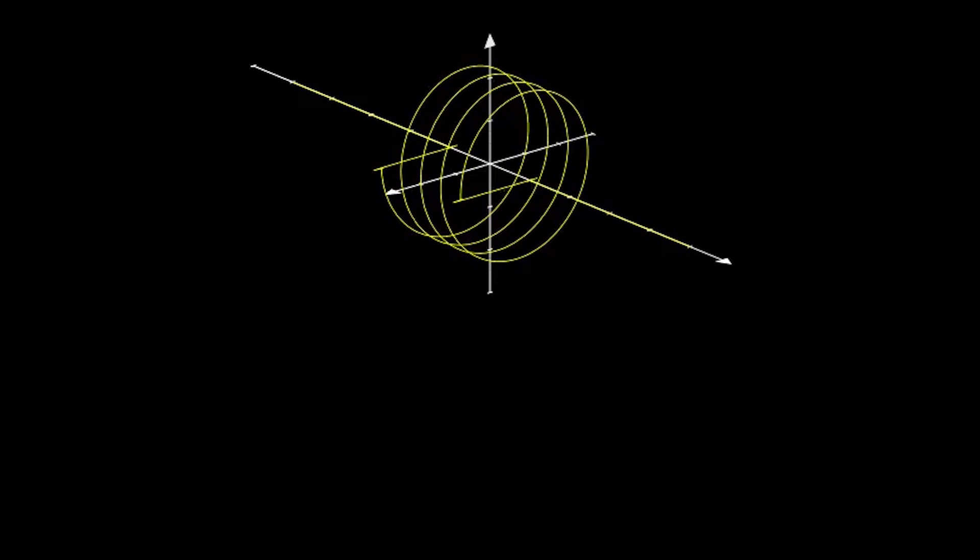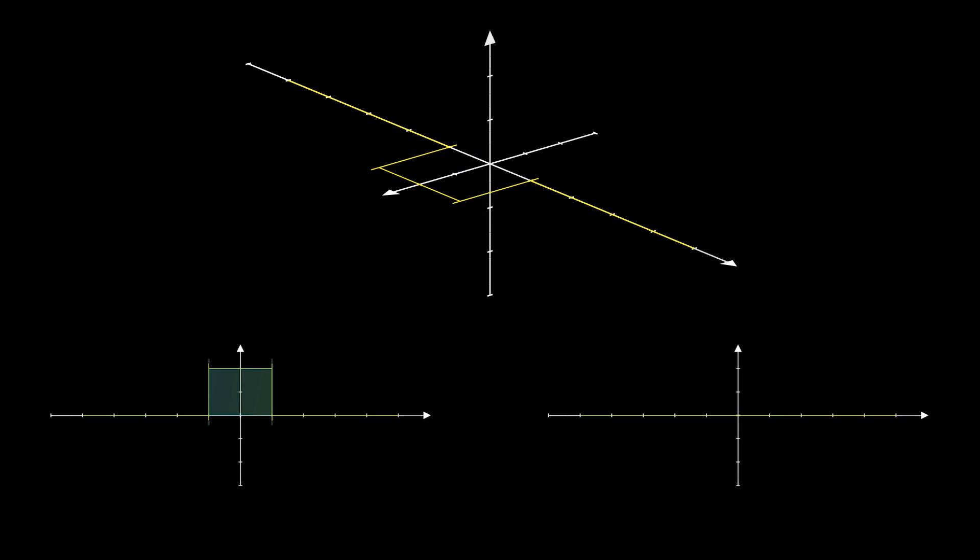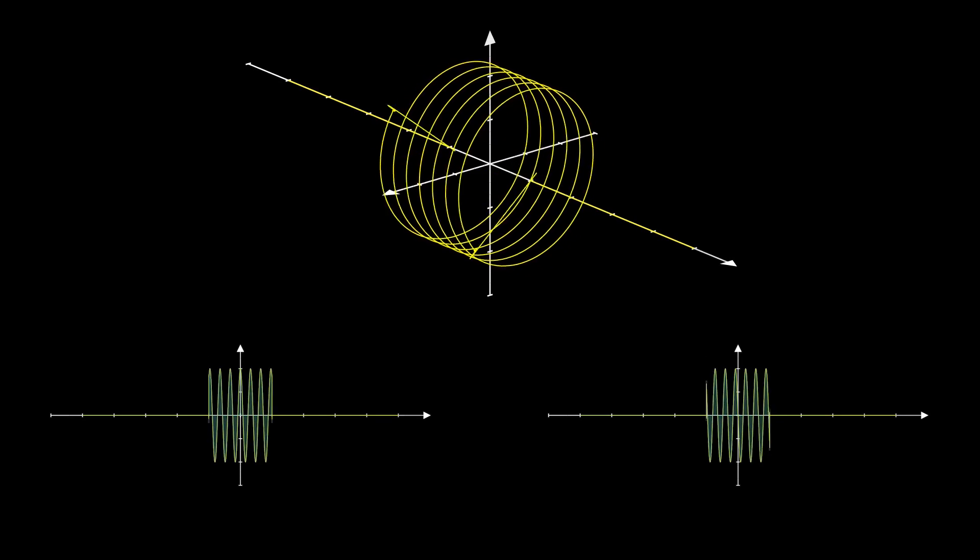Suppose we have a rectangular function and we want to get its frequency content, or its Fourier transform. The first step to get the Fourier transform is modulating or masking a unit amplitude complex exponential with certain frequency with the function that we want to get the Fourier transform of, in our case the rectangular function.